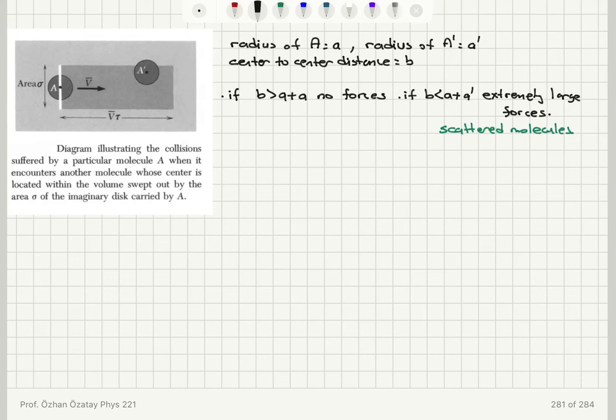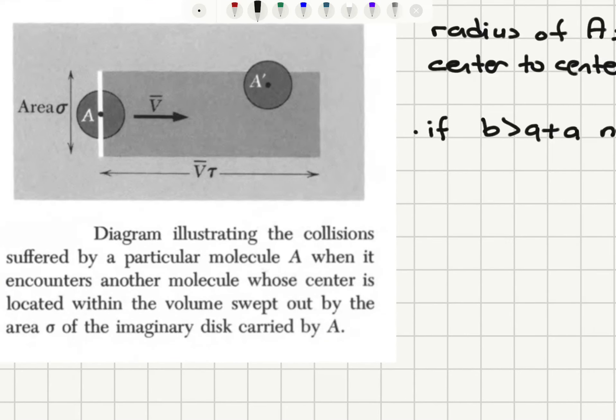So you can think of an imaginary disk of radius a plus a' centered at the center of A that moves with a relative velocity V with respect to A', and there is an area sigma which is spanned by this.